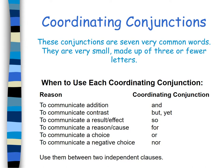Now, let's look at the coordinating conjunctions. These conjunctions are seven very common words. They are very small, made up of three or fewer letters. By the way, you can call them the FANBOYS. When to use each coordinating conjunction: